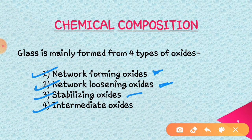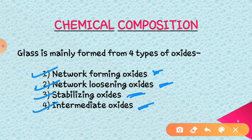The third type is stabilizing oxides. These oxides are also termed as modifiers because they are used for reducing the adaptability of glass with regards to hydrolysis. These oxides are calcium oxide, magnesium oxide, and barium oxide. The last one is intermediate oxides, which are both formers as well as modifiers, and these types of oxides are especially used in special types of glasses.